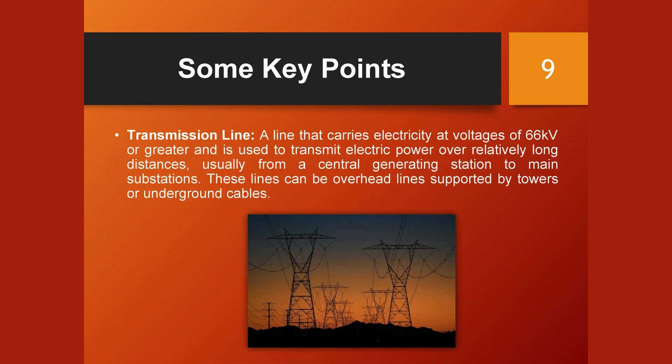A transmission line carries electricity at voltages of 66 kV or greater and is used to transmit electric power over relatively long distances, usually from a central generating station to main substations. These lines can be overhead lines supported by towers or underground cables.